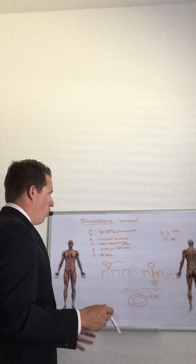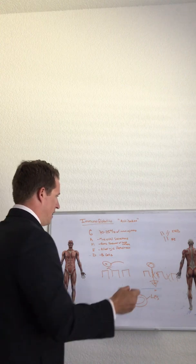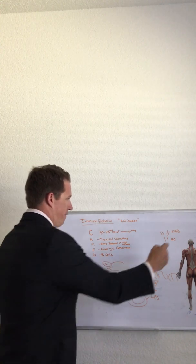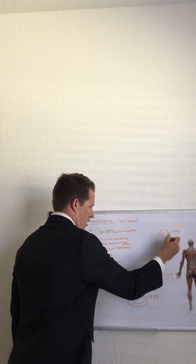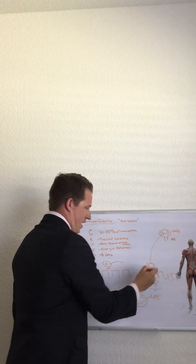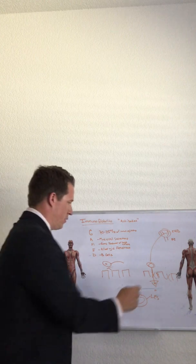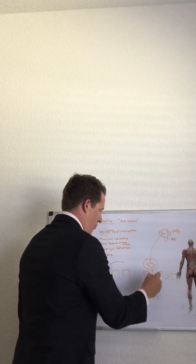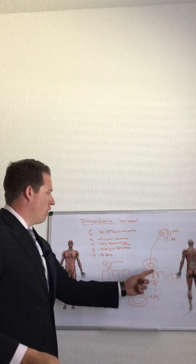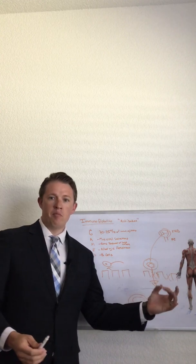And so what immunoglobulins do is that when you ingest them, the Fab region of the antibody through here comes down and it binds to that cell. So it takes the cell away, creates a molecule so big that it can no longer fit through the gut membrane.